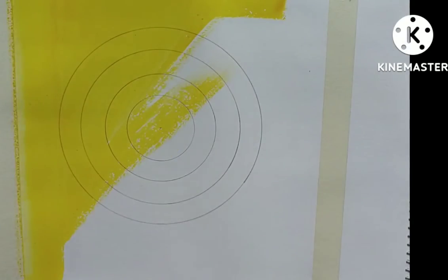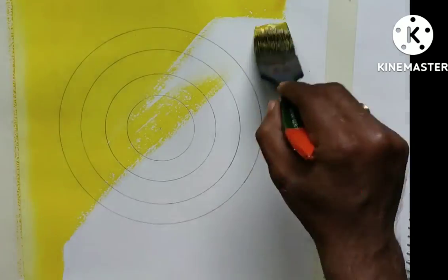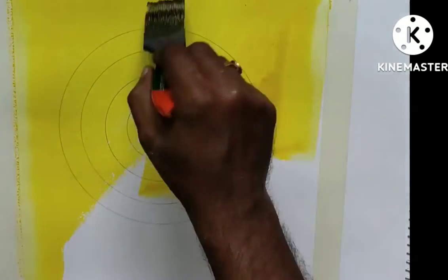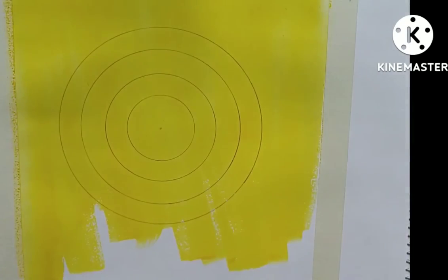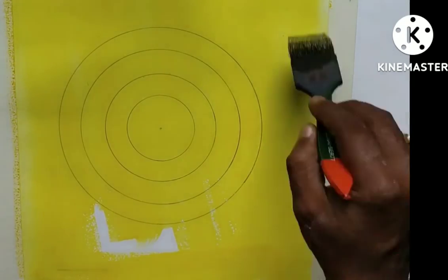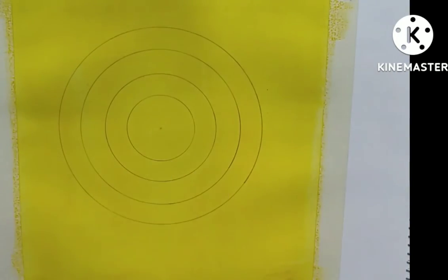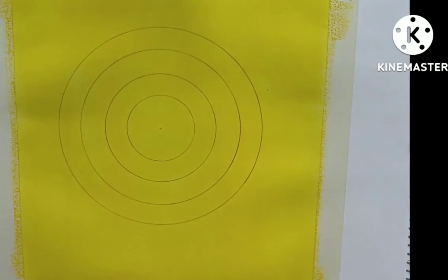Now I am covering the whole page with watercolor and the color is yellow. Use Gamboge in watercolor and do it a little thicker, and paint it.